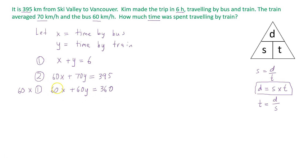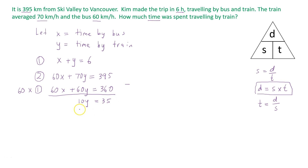Now I'm going to subtract these two equations. 60x take away 60x is 0. 70y take away 60y is 10y. And 395 subtract 360 is 35. So we have 10y equals 35. Dividing both sides by 10, the 10s cancel out, so y equals 3.5.